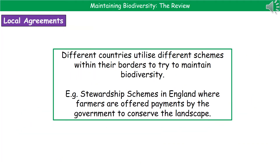It's not just internationally — we need to think locally as well. Different local agreements mean individual countries have come up with their own schemes within their borders to maintain biodiversity. For example, in England we have stewardship schemes whereby farmers receive payments to conserve the landscape rather than farm on it. Local councils also do things like grazing different species on different areas of grassland to increase biodiversity, as seen around the White Cliffs of Dover.